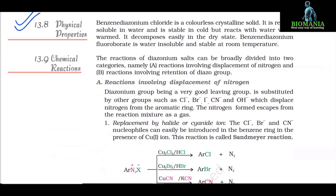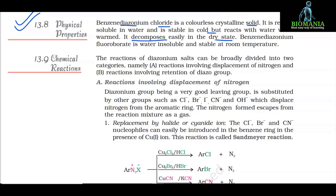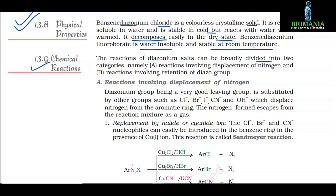13.8 Physical Properties. Benzene diazonium chloride is a colorless crystalline solid. It is readily soluble in water and is stable in cold but reacts with water when warmed. It decomposes easily in the dry state. Benzene diazonium fluoroborate is water-insoluble and stable at room temperature. 13.9 Chemical Reactions. The reactions of diazonium salts can be broadly divided into two categories: reactions involving displacement of nitrogen, and reactions involving retention of the diazo group.